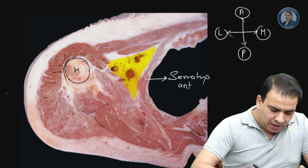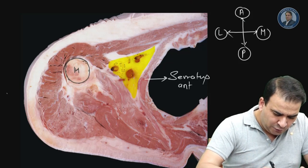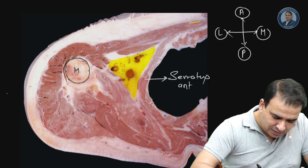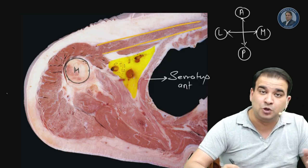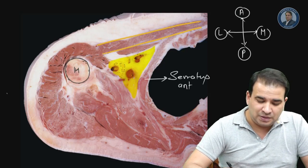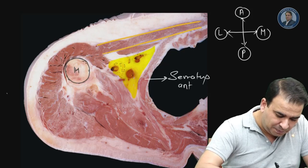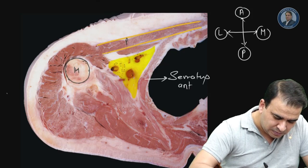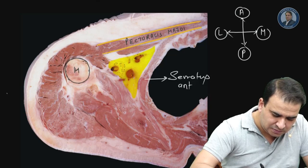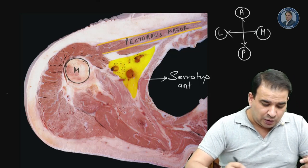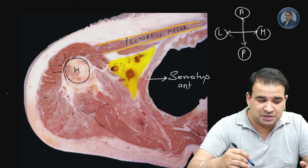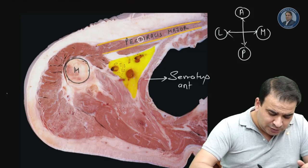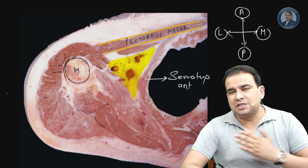Looking at the two muscles anteriorly: this muscle coming from the rib cage goes all the way toward the humerus, attaching to the lateral lip of the bicipital groove — that is the pectoralis major muscle. It originates from the rib cage and goes all the way to the humerus.